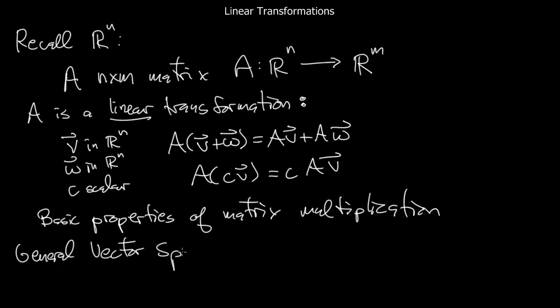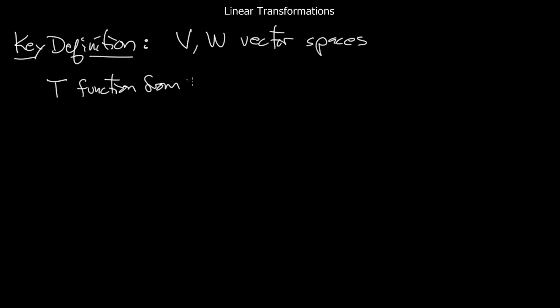So the idea now is to look at the same notion in the setting of general vector spaces, not just R^n. And so there's a very important definition, which I will now give. Suppose you have a vector space V and another vector space W, and suppose you have a function or a mapping from V to W. So T is a map or a function from V to W.